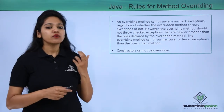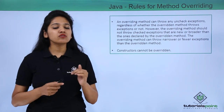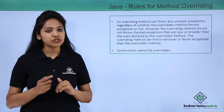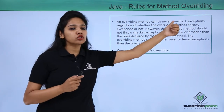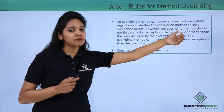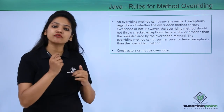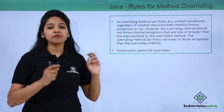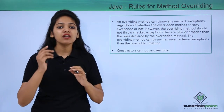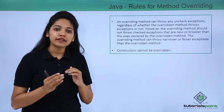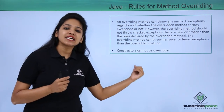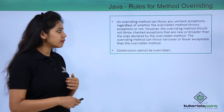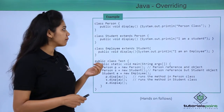There are additional rules: method overriding allows unchecked exceptions but not checked exceptions, since checked exceptions may be defined at a broader level in the parent and cannot be overridden. Additionally, constructors cannot be overridden.